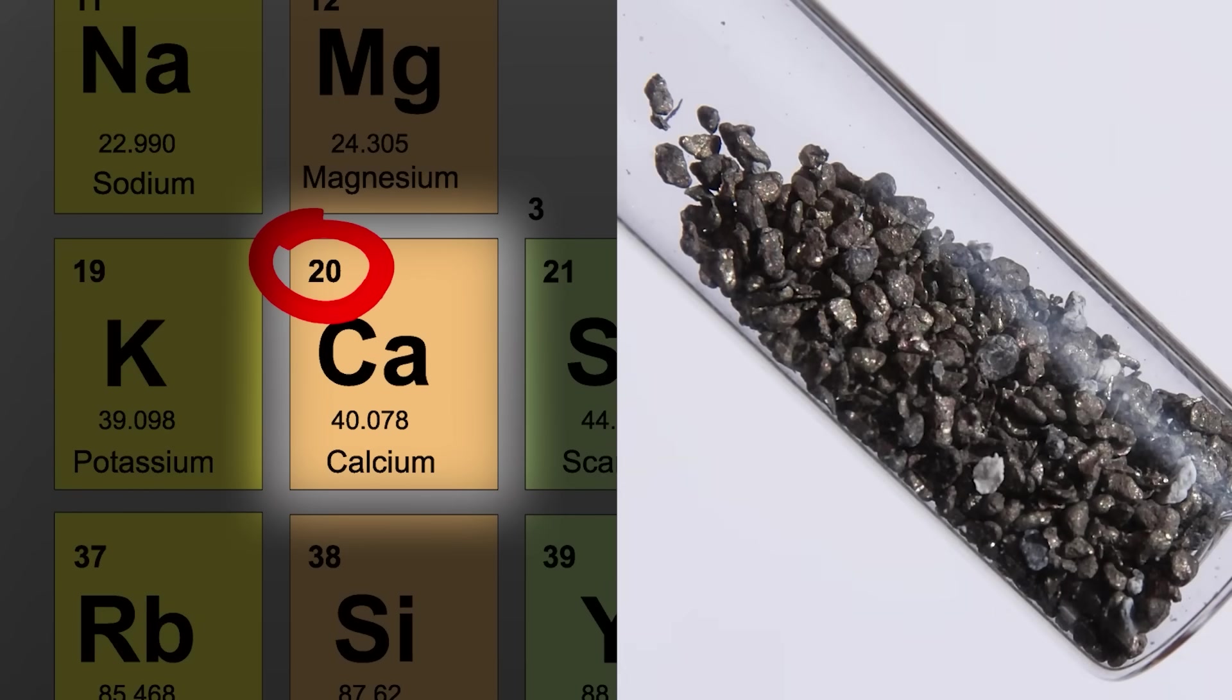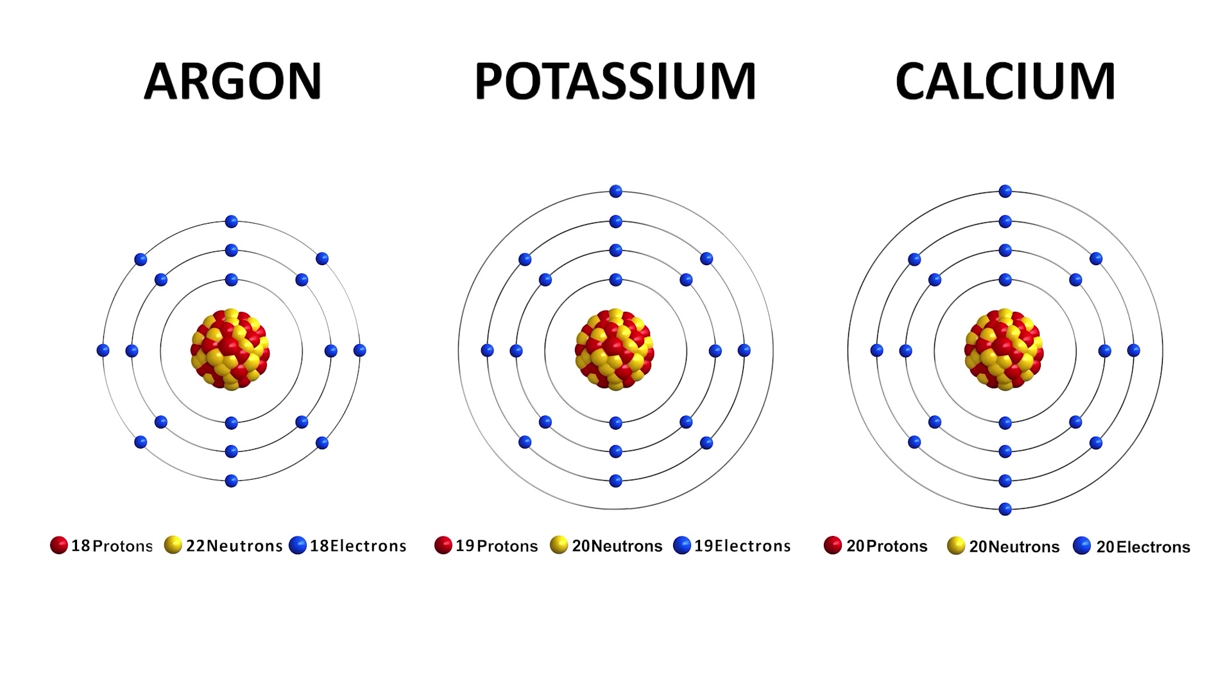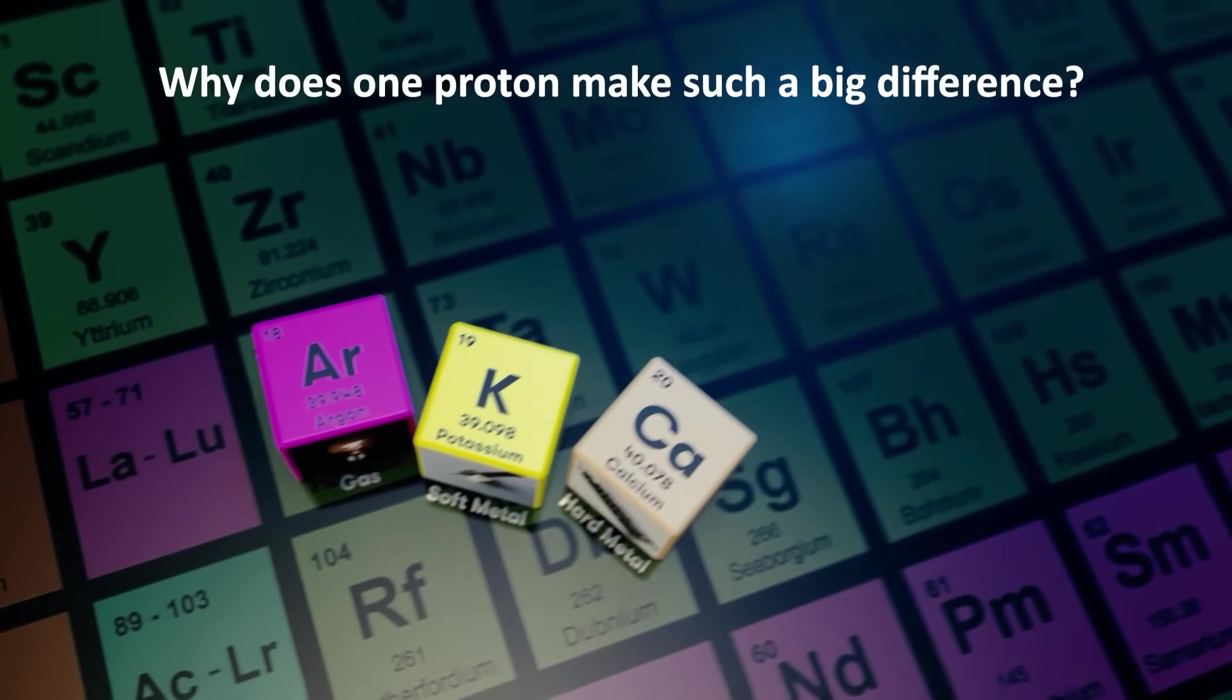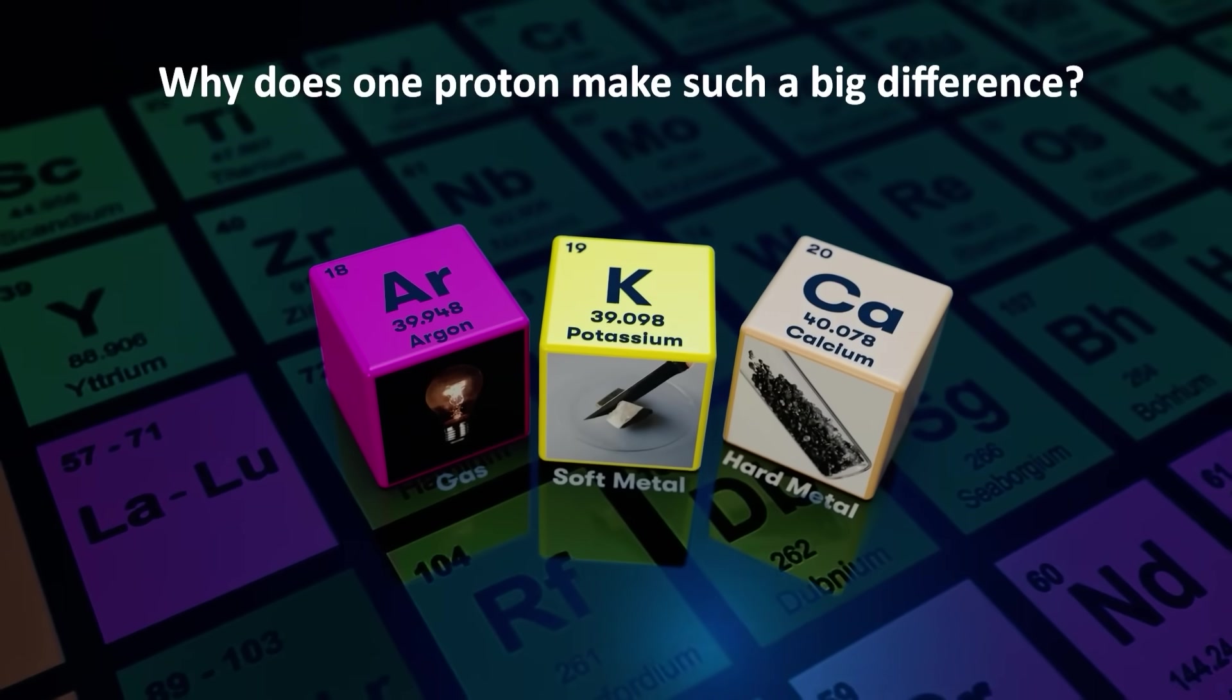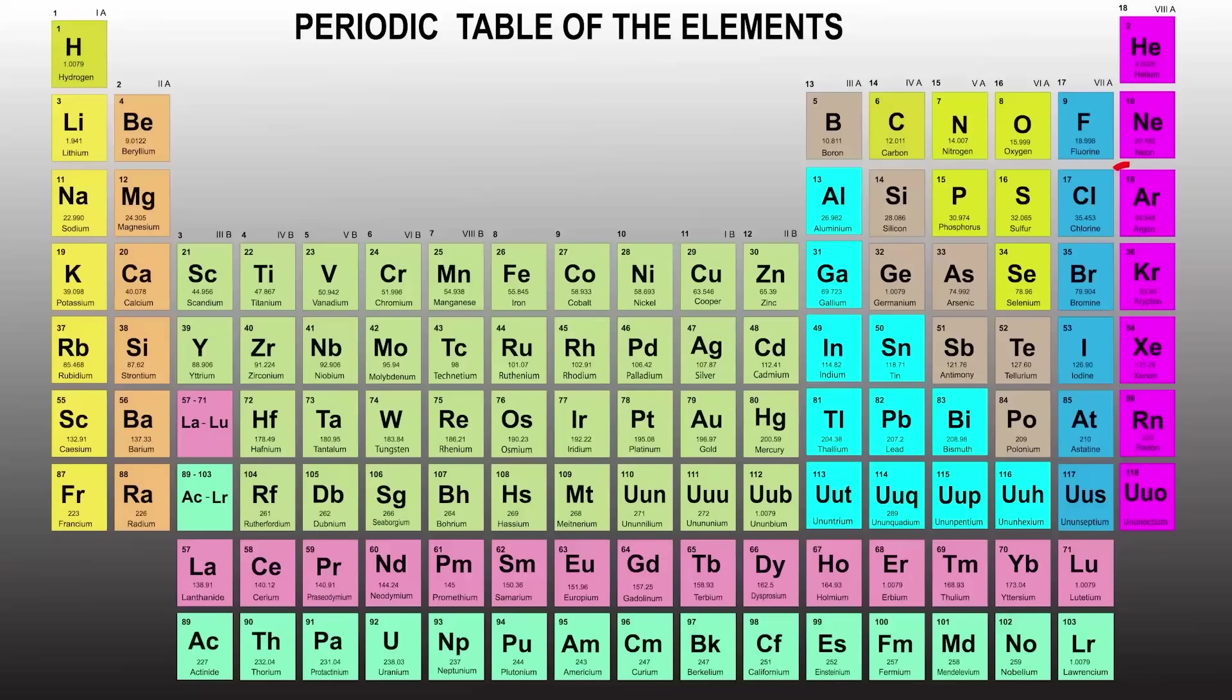This is also a solid at room temperature, but unlike potassium, it's fairly hard. The individual protons in each of these three elements are almost exactly the same. Only the number has changed. And that makes all the difference. Why? The question I want to get to the bottom of in this video is, how can a single proton make such a huge difference in an element's properties?